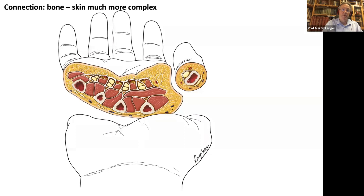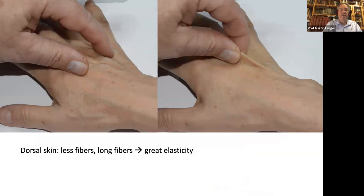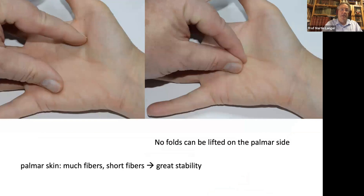A little bit more proximal, in a cross-section through the palm, you can see the fascia constructions from the skin to the bone, much more complicated and complex. On the palmar side, you can see many short fibers; on the dorsal side, fewer fibers and longer ones giving great elasticity. On the palmar side, there are many short fibers providing great stability. It is nearly impossible to lift skin folds on the palmar side, whereas on the dorsal side it is very easy. These are the differences between the grip side and the dorsal side.